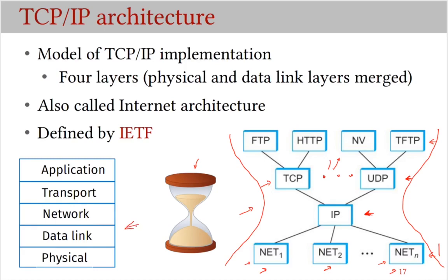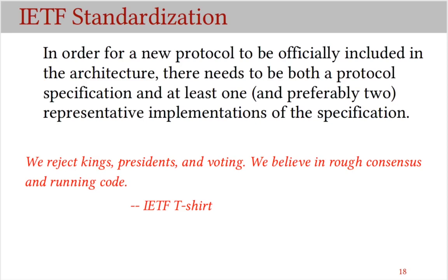This shows the commonly used model of internet architecture with five layers. In this course, we are going to progress from physical layer to data link layer to network layer to transport layer, and we will discuss applications as we go. The standard protocols used in the internet architecture are defined by IETF, which stands for Internet Engineering Task Force. IETF requires that for a new protocol to be included in the architecture, there must be at least one representative implementation.